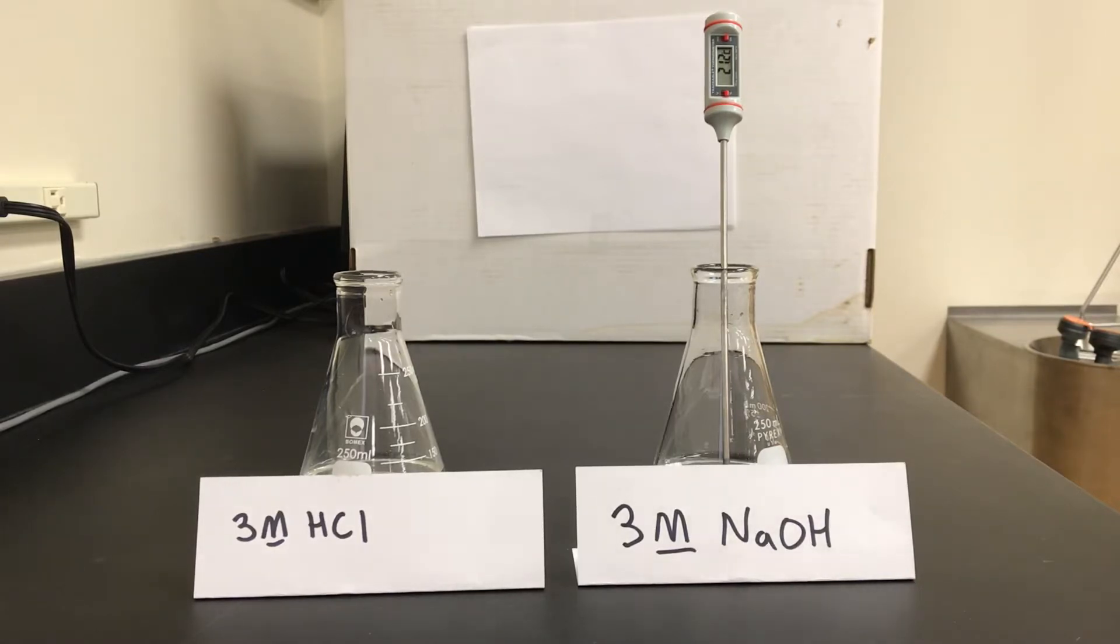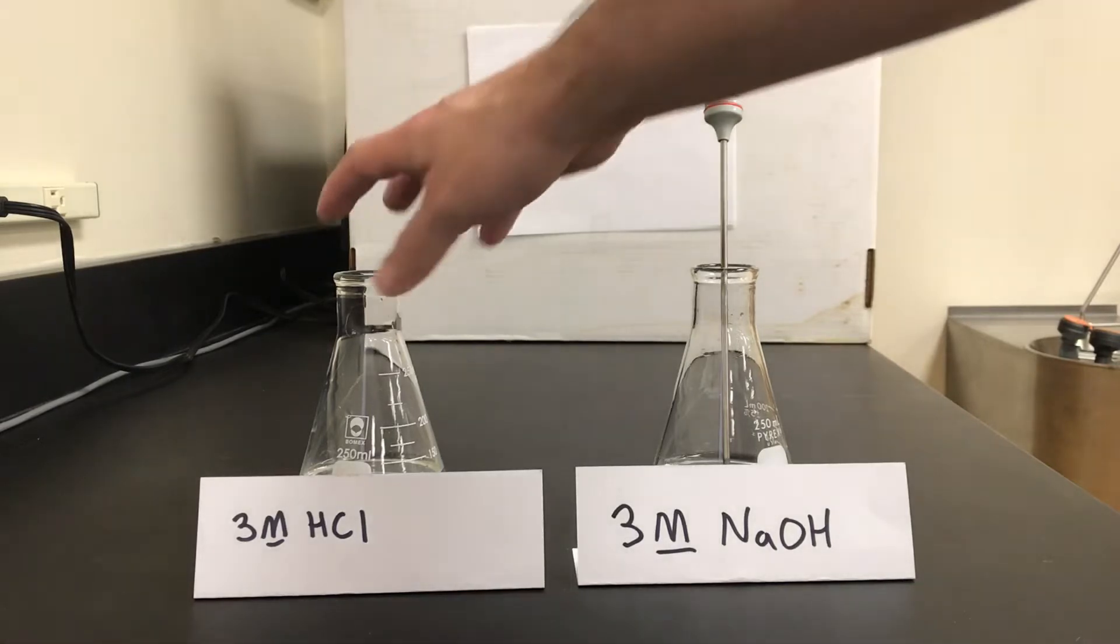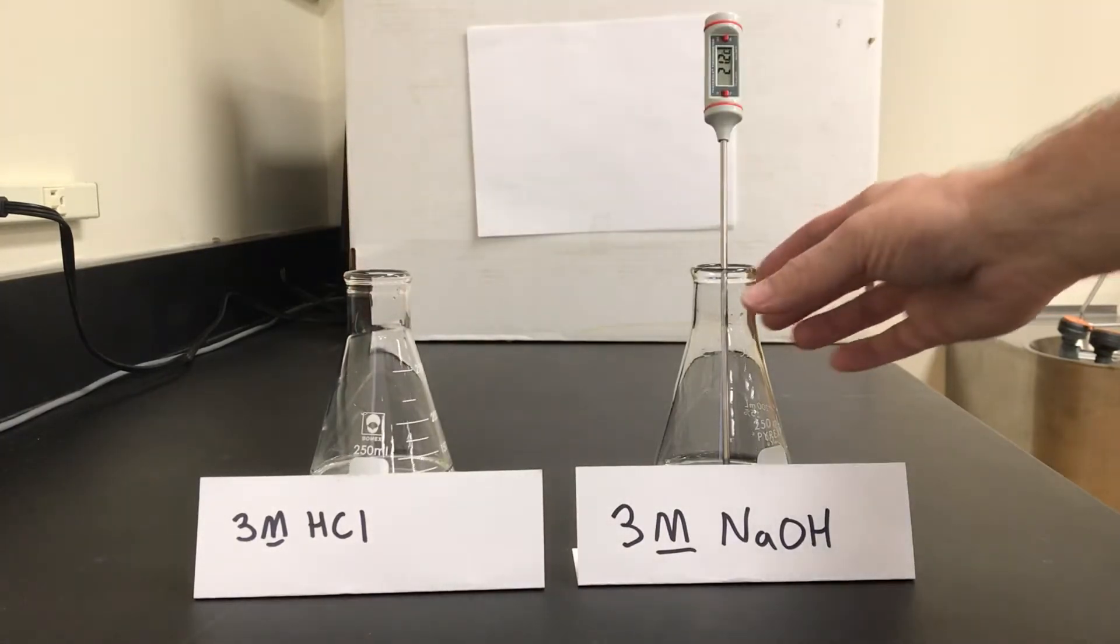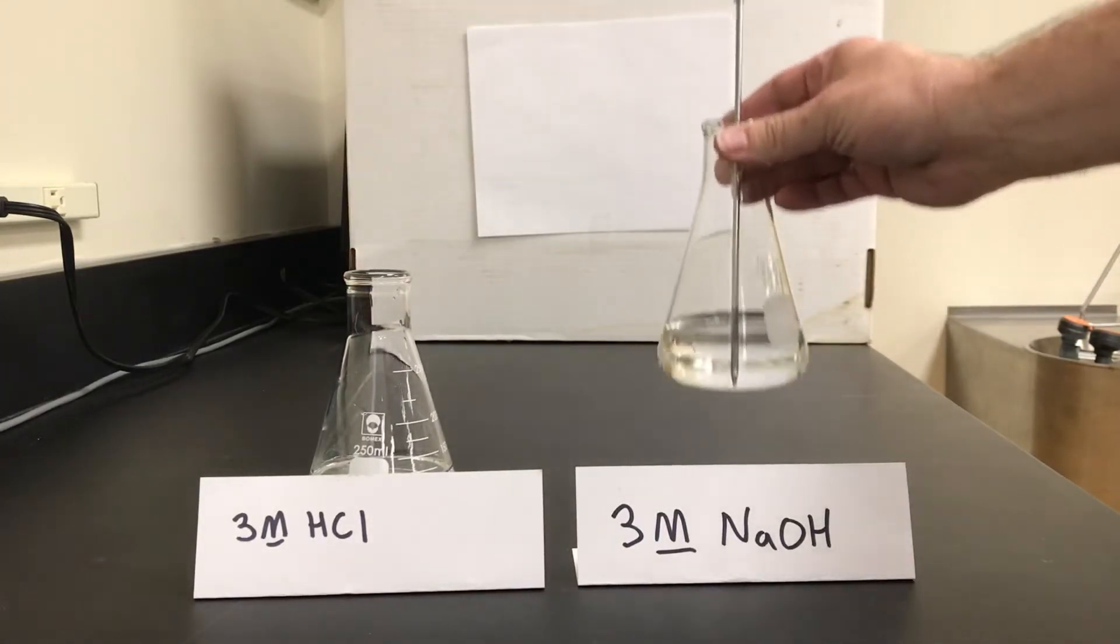Now what we want to observe is what sort of temperature change we will see for an exothermic reaction. So I have here 100 milliliters of 3 molar hydrochloric acid and 100 milliliters of 3 molar sodium hydroxide.